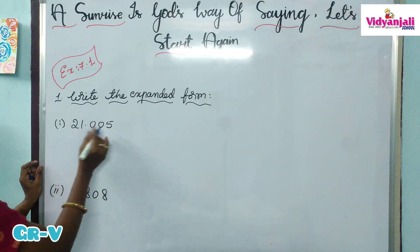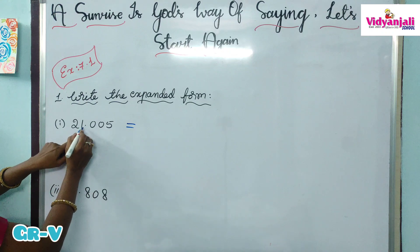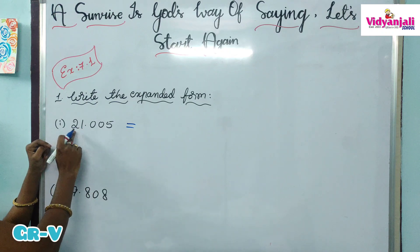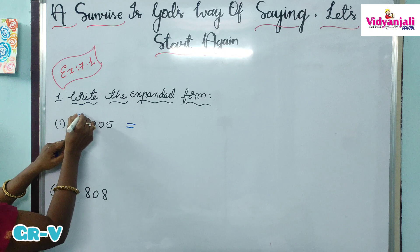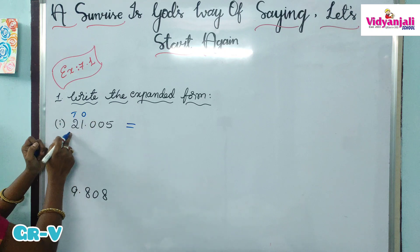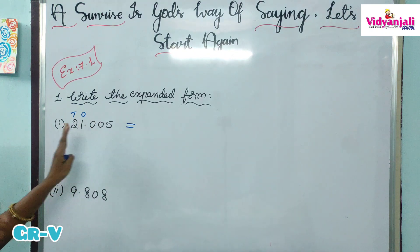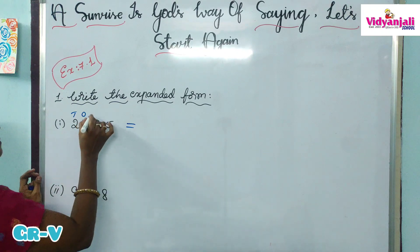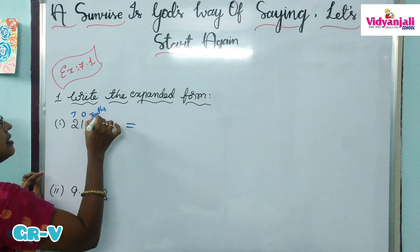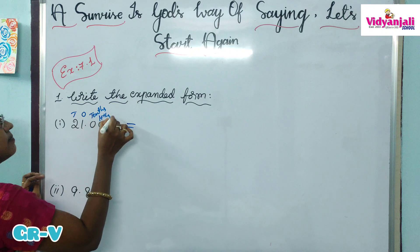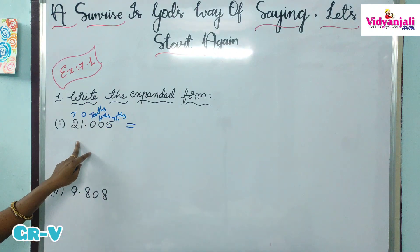First, let us specify the place values. Before the decimal point this is the integral part. In the integral part, normal place values are 1's, 10's, 100's and so on. In the decimal part, the place values are 10ths, 100ths, 1000ths.